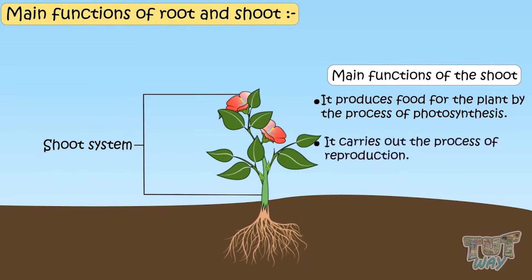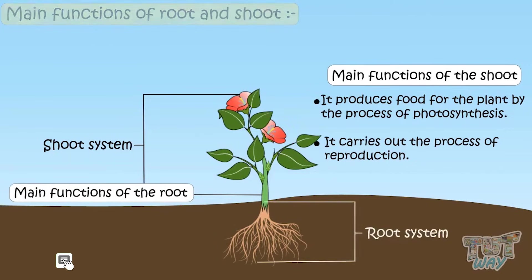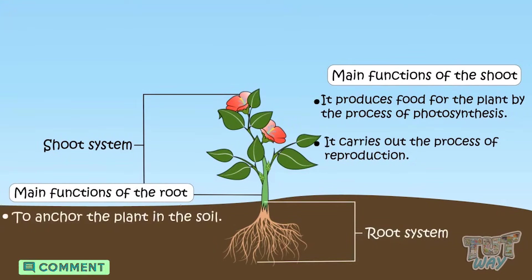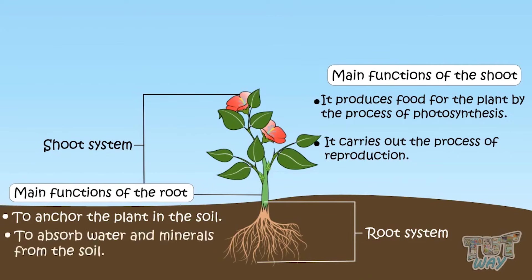And it carries out the process of reproduction too. The main functions of root are to anchor the plant in the soil, and to absorb water and minerals from the soil, and also stores food in some plants.